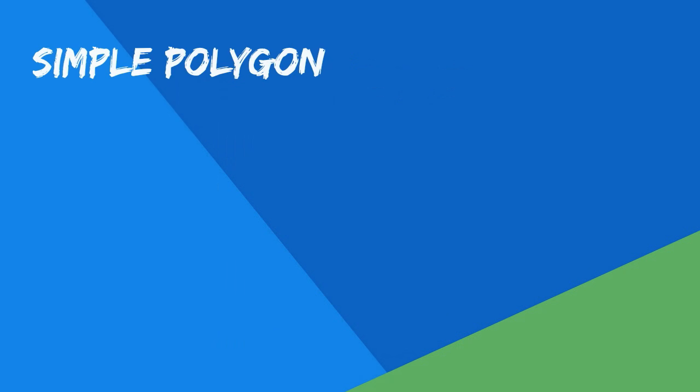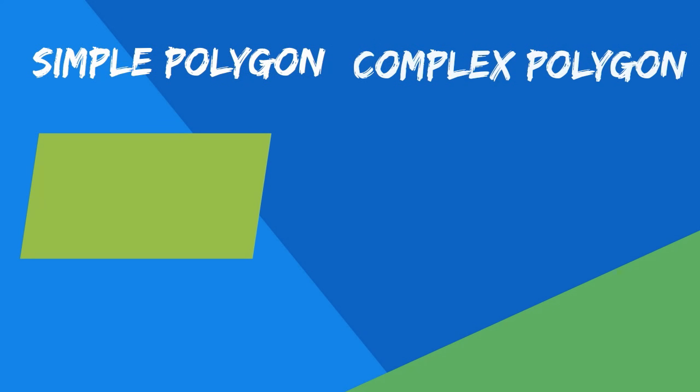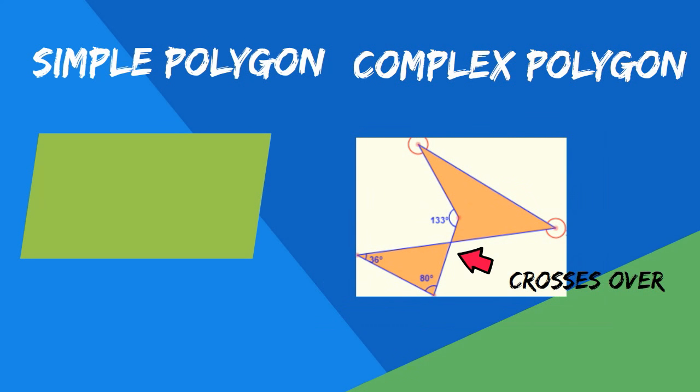A simple polygon does not have any lines that cross over. A complex polygon has at least one line that crosses over itself.